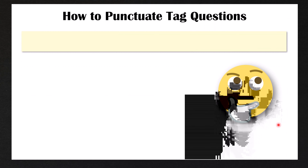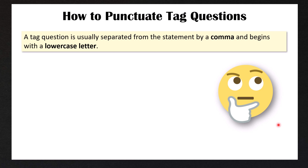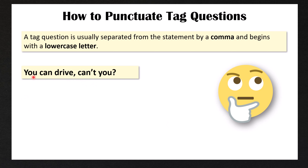So how do you punctuate tag questions? A tag question is usually separated from the statement by a comma, and begins with a lowercase letter. For example: 'You can drive, can't you?' You see here that we separate the statement from the tag question with a comma, and we have a lowercase letter after the comma.